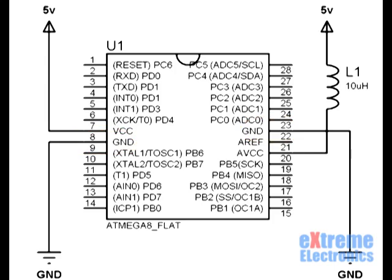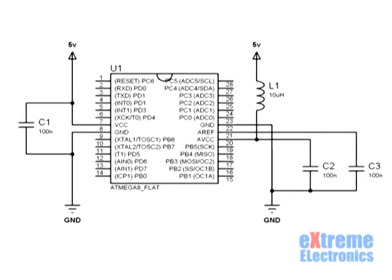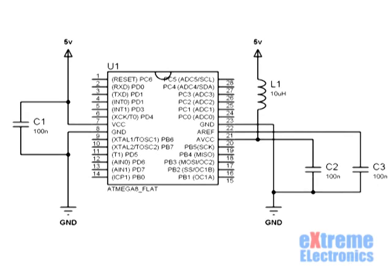We should not forget about the bypass capacitors — small 0.1 microfarad ceramic disk capacitors connected between VCC and ground lines and placed as close to the MCU as possible. Here you can see three bypass capacitors C1, C2, and C3, all 0.1 microfarad capacitors.